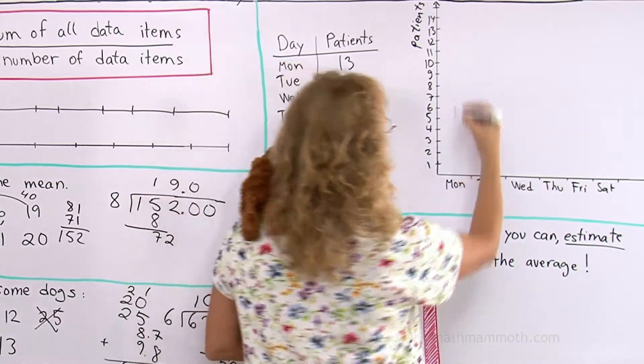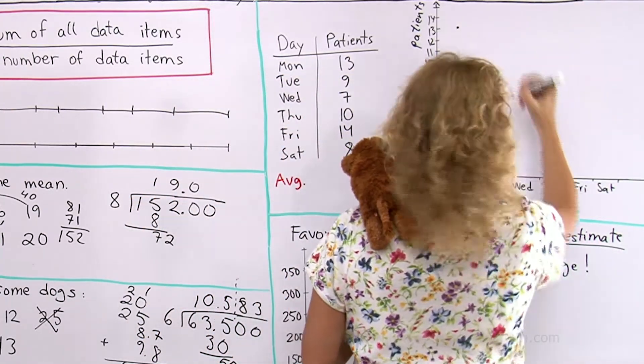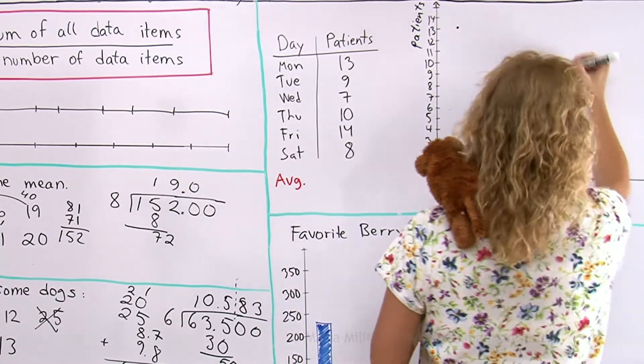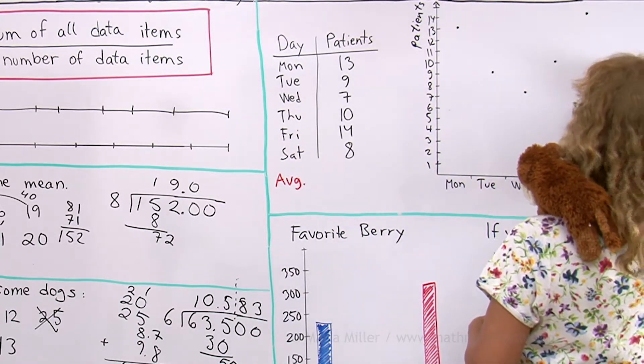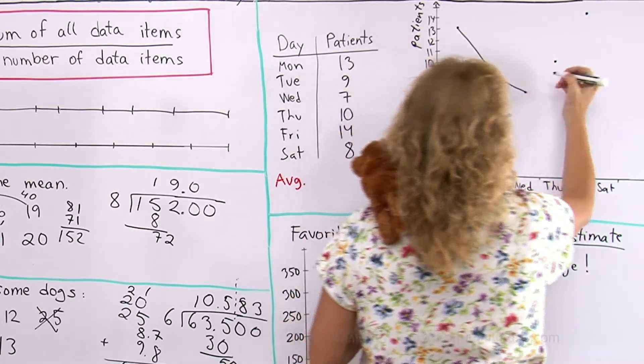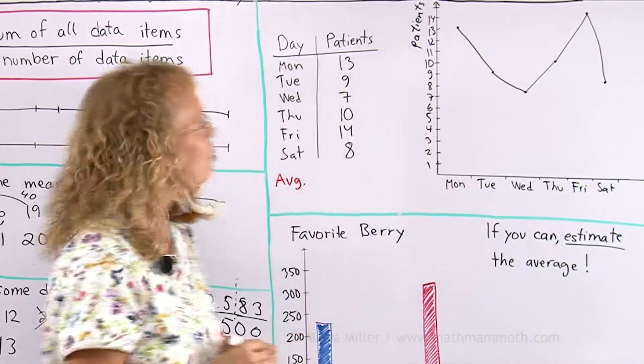Monday, 13. Tuesday is 9. Wednesday is 7. Then Thursday's 10. Then 14. Then Saturday, 8. I'll save time and not use a ruler. Kind of zigzaggy experience.